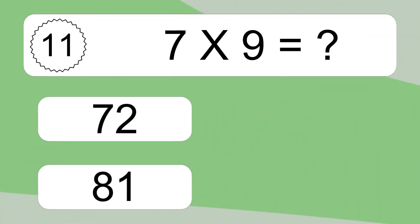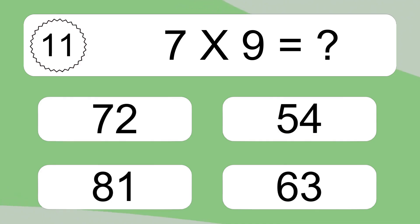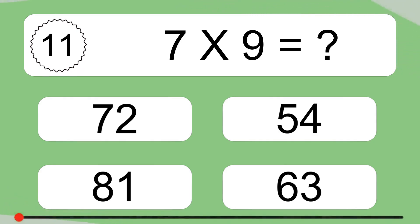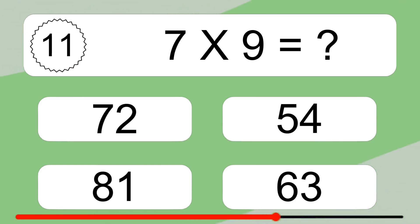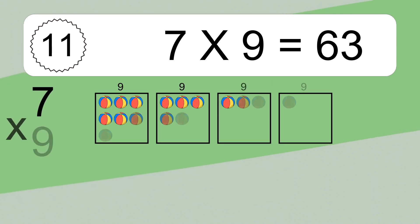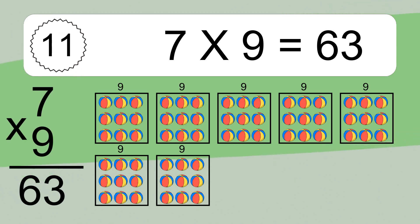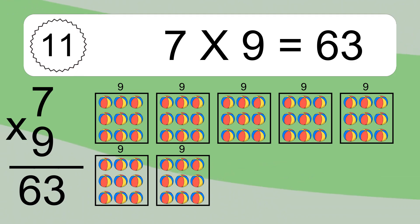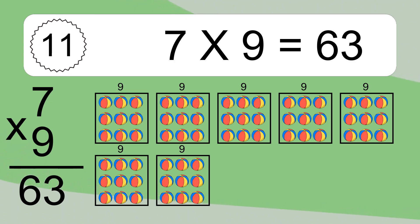7 times 9 equals what? 7 times 9 equals 63. We have seven boxes and each box has nine colorful balls inside. If you count all the balls in all the boxes together, you will have seven times nine balls. This equals 63 balls.